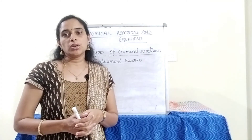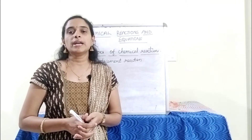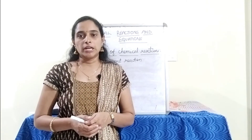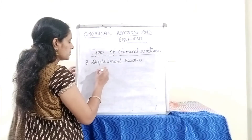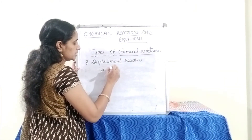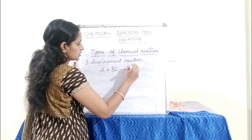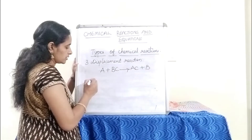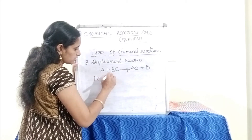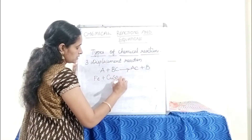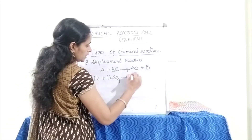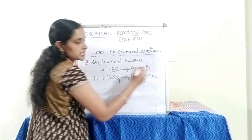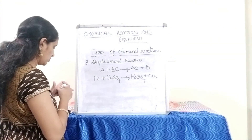Displacement reaction is a chemical reaction in which a more reactive element displaces a less reactive element from its salt. The general form is A + BC → AC + B. An example is iron + copper sulphate → iron sulphate + copper.